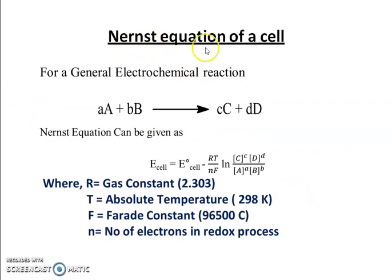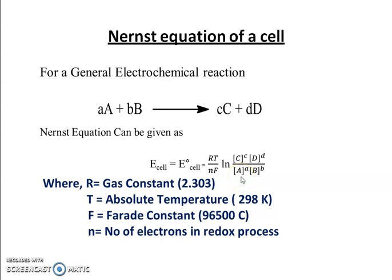Now let us see how we can represent the Nernst equation for a cell. A cell is a combination of two electrodes: the anode, where oxidation takes place, and the cathode, where reduction takes place, both connected via an externally connected metal wire or conducting material. For a general electrochemical reaction where A moles of A react with B moles of B to give C moles of C and D moles of D, the Nernst equation is written as: EMF of cell equals E0 cell minus RT divided by NF, times ln of the concentration of products divided by concentration of reactants.